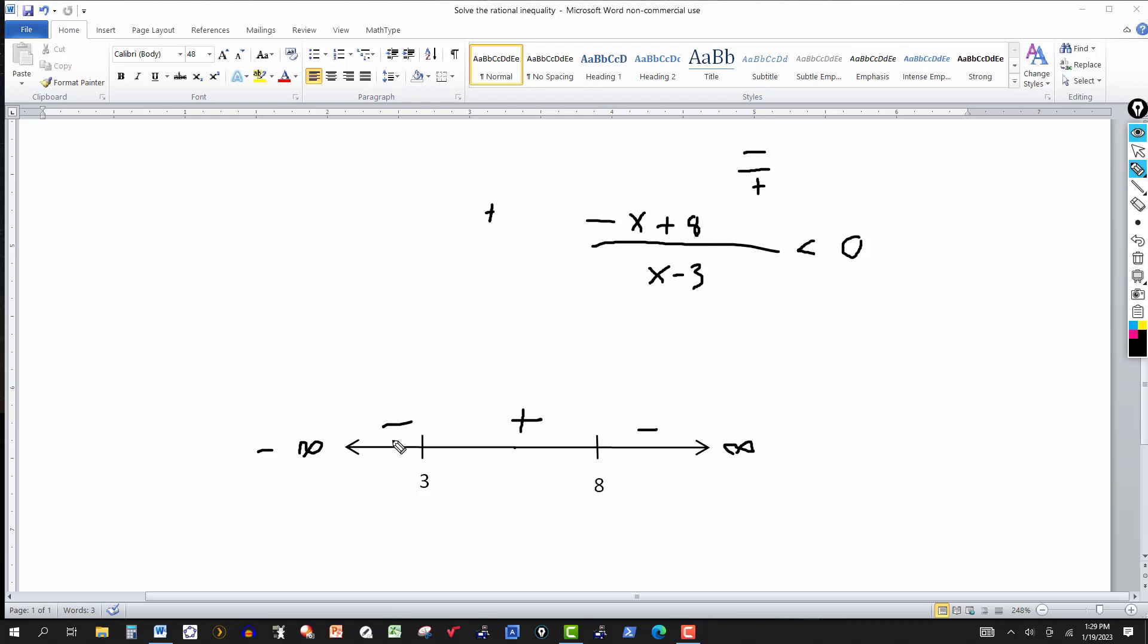Now once you have the signs on this number line, you can just get the solution from the number line. So what do we want? If this had been greater than 0, then we'd be looking at the interval in the middle, positive, so the solution would be everything between 3 and 8. But it's less than 0, so we look at this interval here and this interval here. So the solution that will work in this particular case is, in set-builder notation, it would be the set of all x such that x is less than 3 or greater than 8.